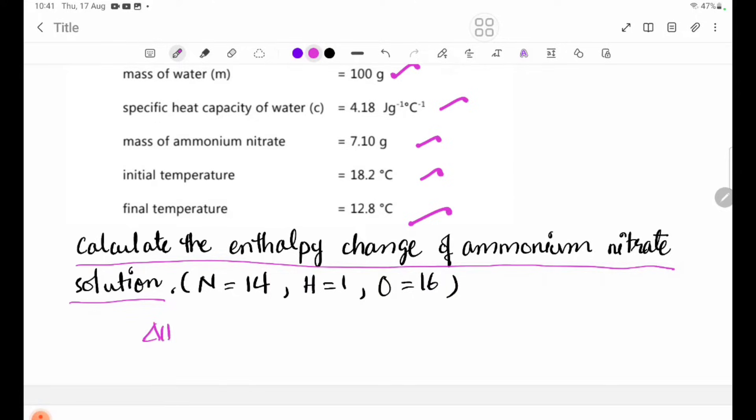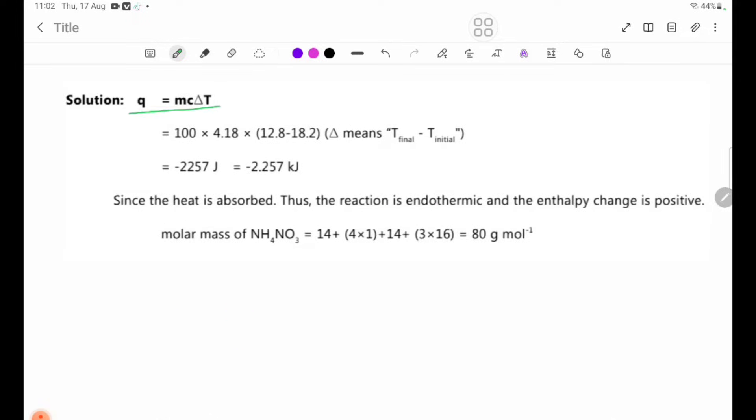The formula is Q equals mc delta T. We have delta T equals 12.8 minus 18.2, which equals minus 5.4 degrees Celsius.